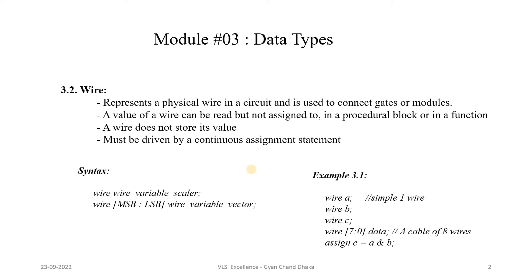In this module we are going to cover only the important data types used in Verilog HDL. The first data type is wire. A wire represents a physical wire connection in a circuit and is used to connect gates or modules. A wire's value can be read but not assigned to in a procedural block or in a function.